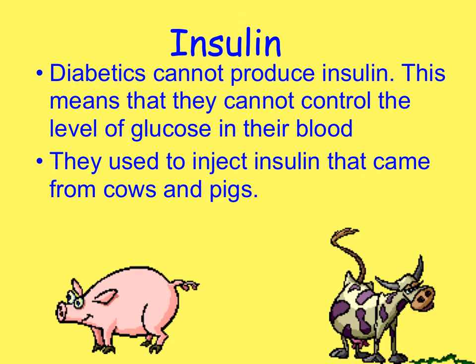When an individual suffers from diabetes they cannot produce insulin, and that means they can't control the level of glucose in their blood. They have to inject insulin into their bodies to help keep their blood glucose levels within the right parameters. In the past they've used insulin that came from cows and pigs.